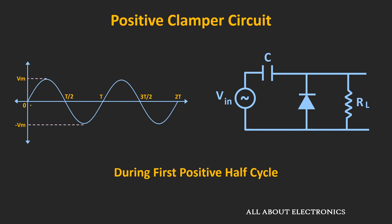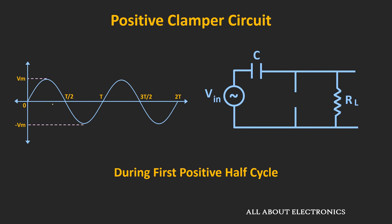During the positive half cycle, this diode will act as an open circuit, because the voltage at the cathode is more than the anode. So considering the ideal diode, it will act as an open circuit. During the positive half cycle, this capacitor will get charged through this path. But considering the RC time constant is very large compared to the time period, during the positive half cycle it will not be able to charge to the peak value. We can assume that during the positive half cycle, the output will follow the input signal — so you will get this type of waveform.